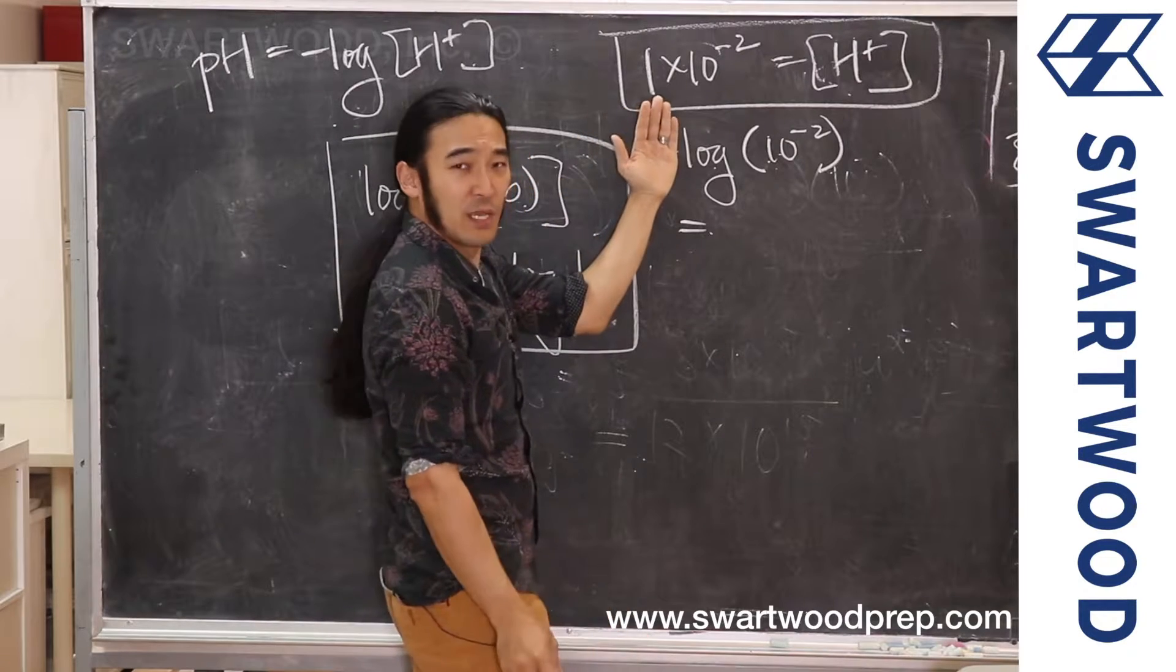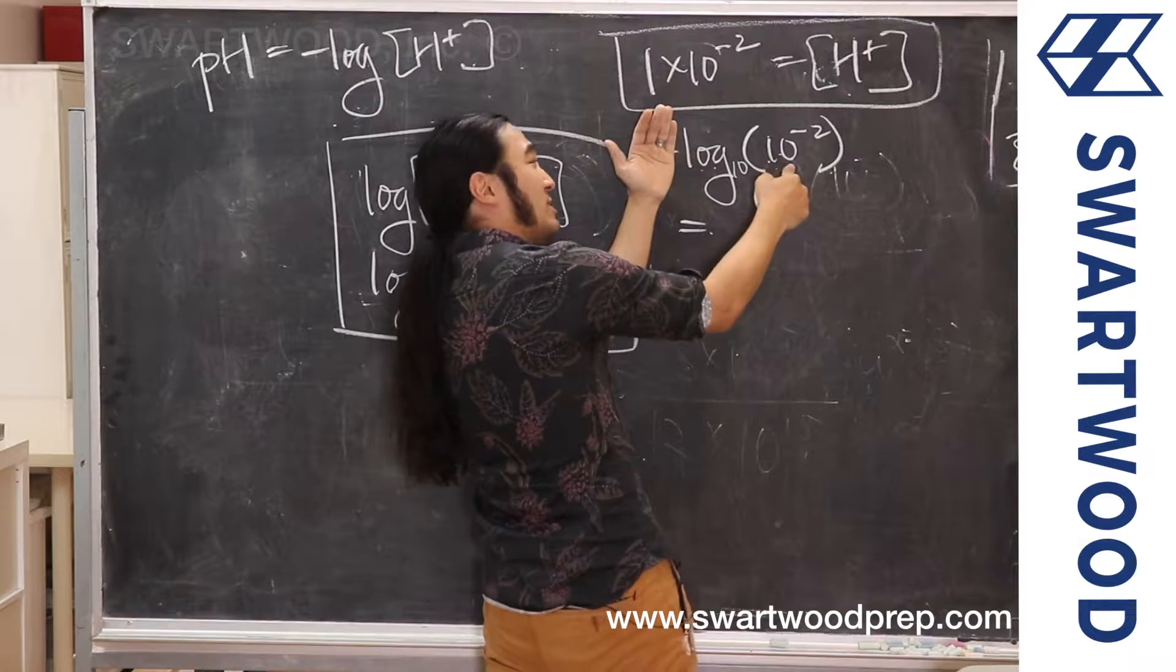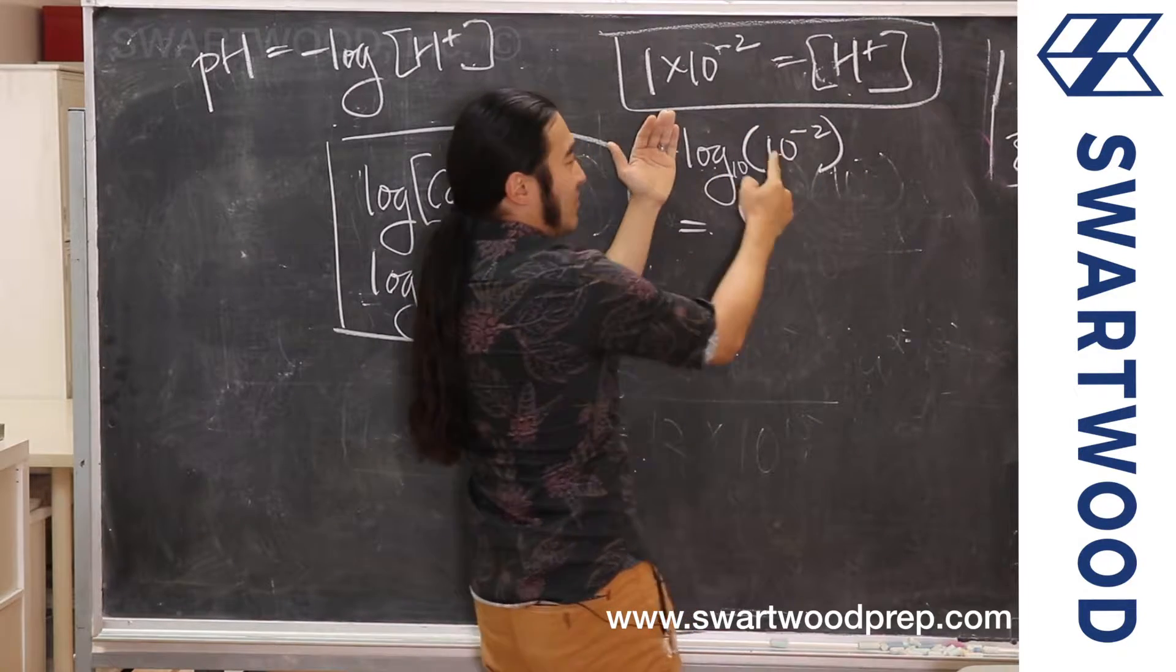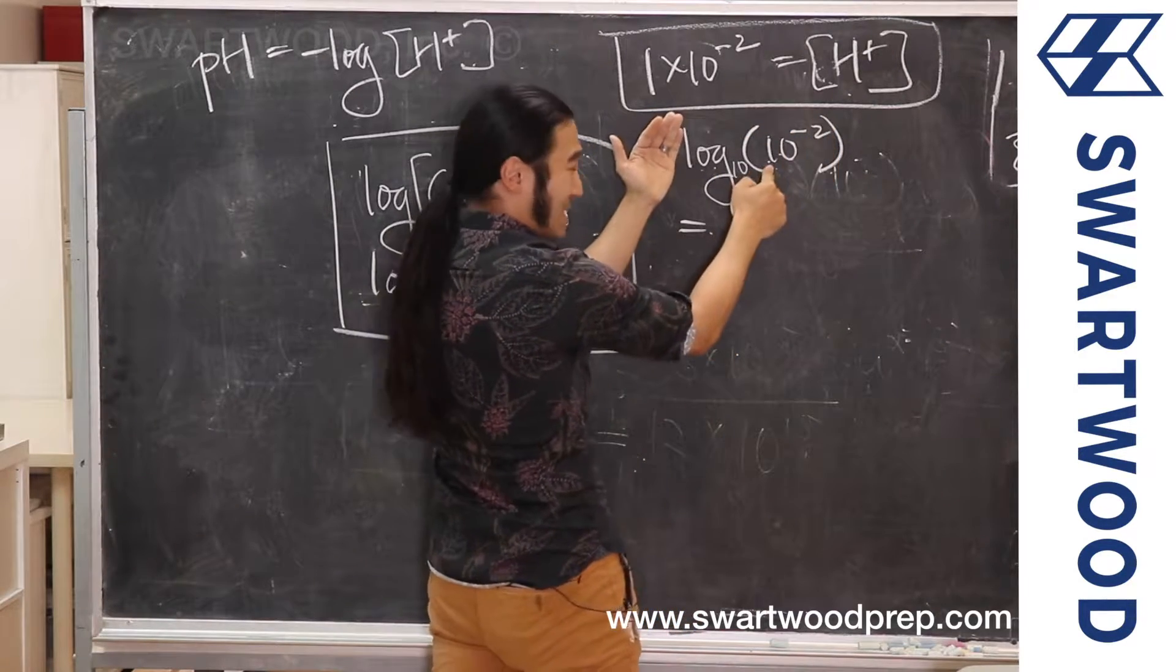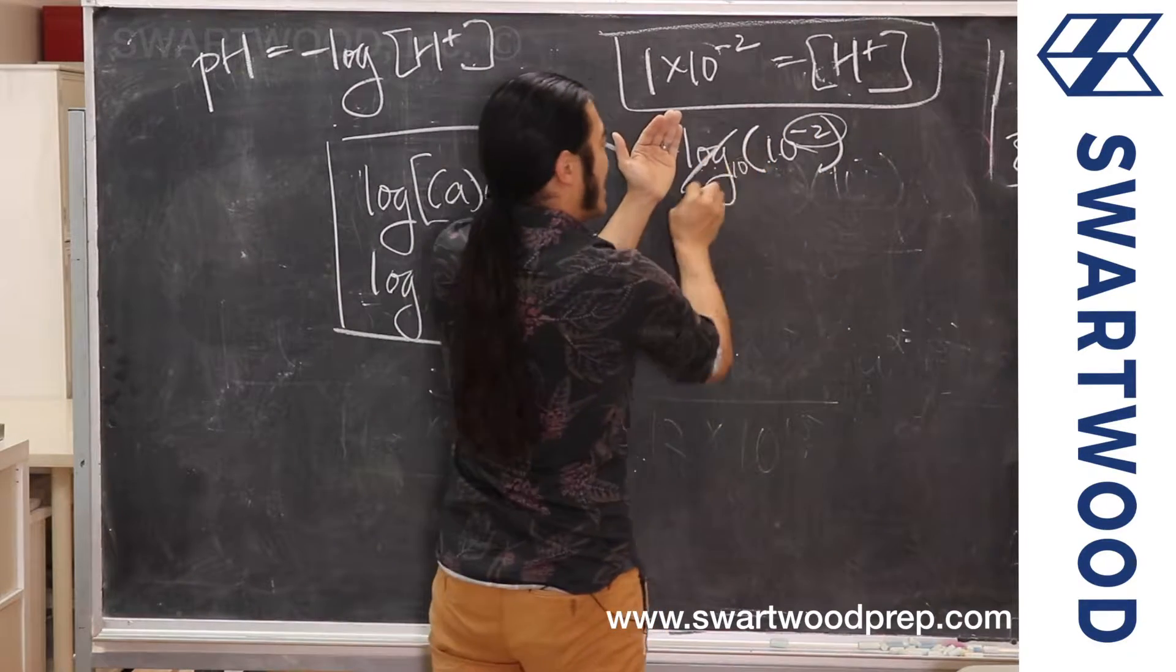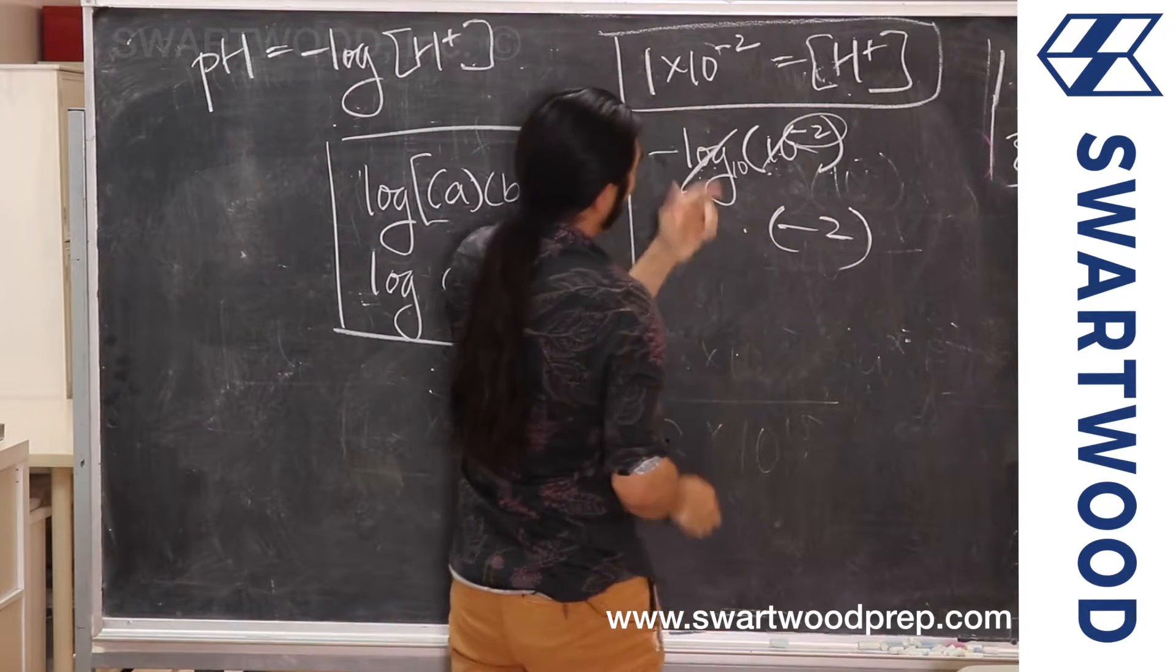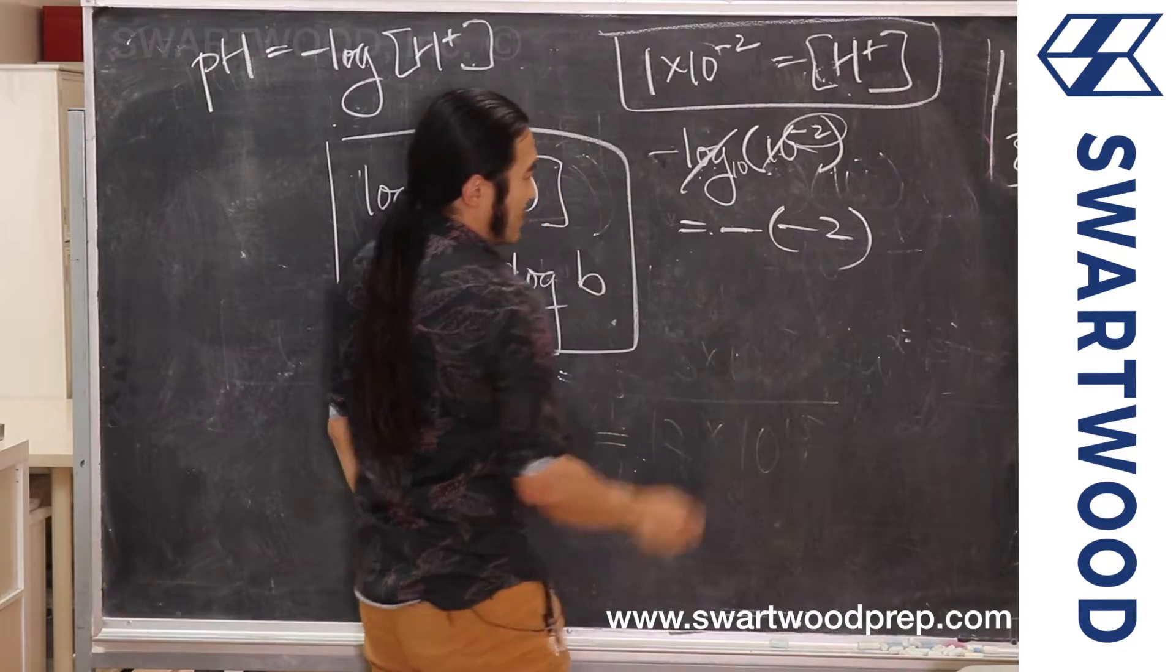Well, first of all, just look at this. Remember, log looks at the exponent, and log base 10 looks at what power of 10 will give you this number. Well, if it's 10⁻², the power to get 10⁻² is negative 2. So these guys will kill each other, and you'll actually just get negative 2. Of course, the negative's in front, so you do this.